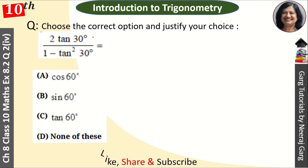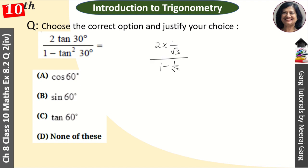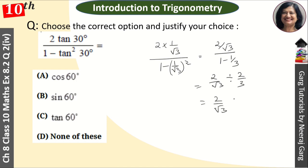Chautha MCQ: 2 tan 30° upon 1 minus tan² 30°. Options: cos 60°, sin 60°, tan 60°. Values put karo — tan 30° = 1/√3. Numerator: 2/√3. Denominator: 1 minus (1/√3)² = 1 minus 1/3 = 2/3. Toh expression hai (2/√3) ÷ (2/3) = 2/√3 × 3/2. 2 se 2 cancel, aur 3/√3 = √3. Toh answer aaya √3, jo ki tan 60° ki value hoti hai. Answer hai: tan 60 degree.